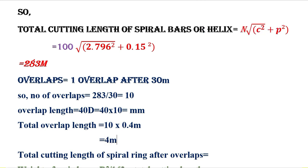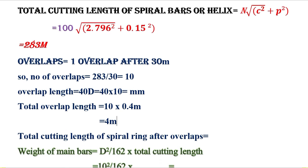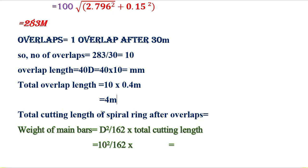Total cutting length of the spiral ring including overlaps = 283 + 4 = 287 meter. This is the total cutting length of the spiral bars after including the overlaps.